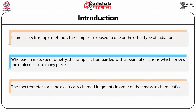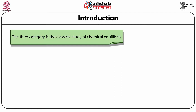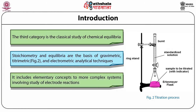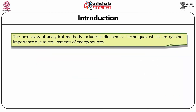The third category is the classical study of chemical equilibria. Stoichiometry and equilibria are the basis of gravimetric, titrometric, and electrometric analytical techniques. It includes elementary concepts to more complex systems involving the study of electrode reactions under controlled experimental conditions and the use of solvents other than water. The next class of analytical methods includes radiochemical techniques, which are gaining importance due to requirements of energy sources. For many analytical problems, the use of radioactive isotopes provides the ultimate interest in analysis.